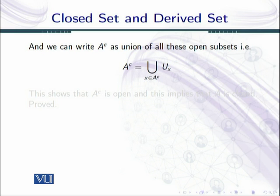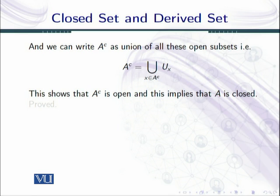Now U_x is an open set, aur humein pata hai ki open sets ki arbitrary union bhi open hoti hai — chahe finite elements hon ya infinite elements hon. So the union on the right-hand side, i.e., union over X in A complement of U_x, is open because this is the union of open sets. So it means that A complement is open. This implies that A is closed. So we have proved the theorem that a set is closed if and only if it contains all its limit points.